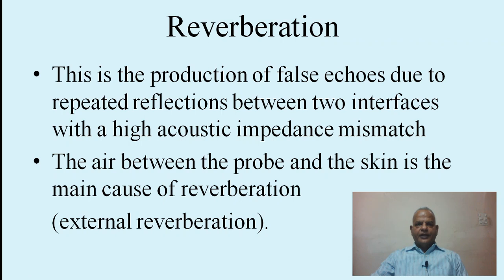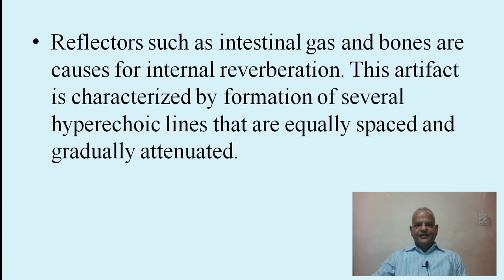The most common artifact is reverberation. Reverberation is the production of false echoes due to repeated reflections between two interfaces with a high acoustic impedance mismatch. The air between the probe and the skin is the main cause of external reverberation, so a gel must be applied to provide a medium for sound to travel. Reflectors such as intestinal gas and bones cause internal reverberation. This artifact is characterized by several hyperechoic lines that are equally spaced and gradually attenuated.